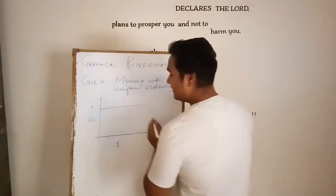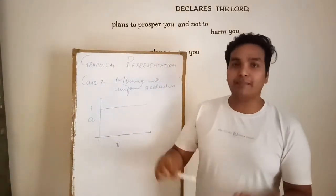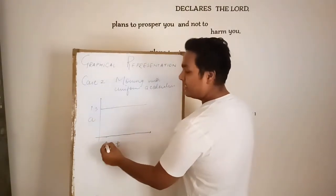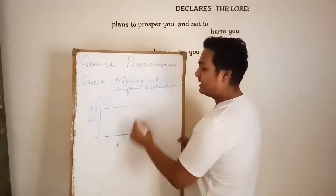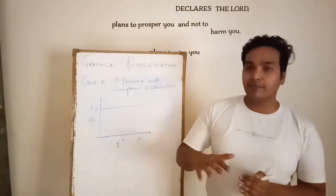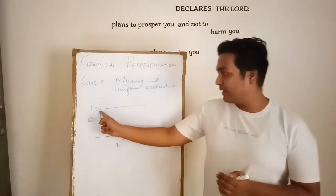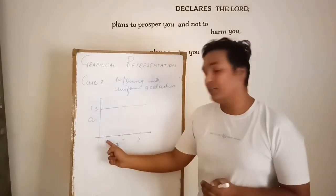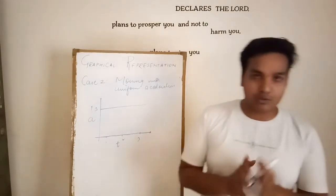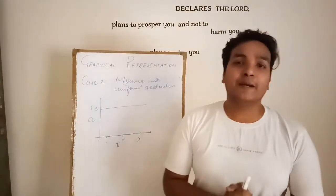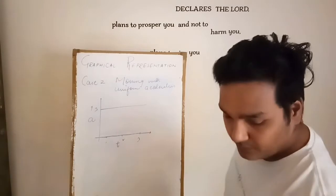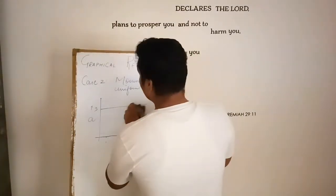For example, suppose a body is moving with uniform acceleration of 3 m/s². At 1 second the acceleration is 3, at 2 seconds it is also 3, at 3 seconds it is also 3 — the acceleration is the same everywhere. So the graph is a horizontal straight line. I hope you are getting the second case: when a body is moving with uniform acceleration, the graph is a straight horizontal line.